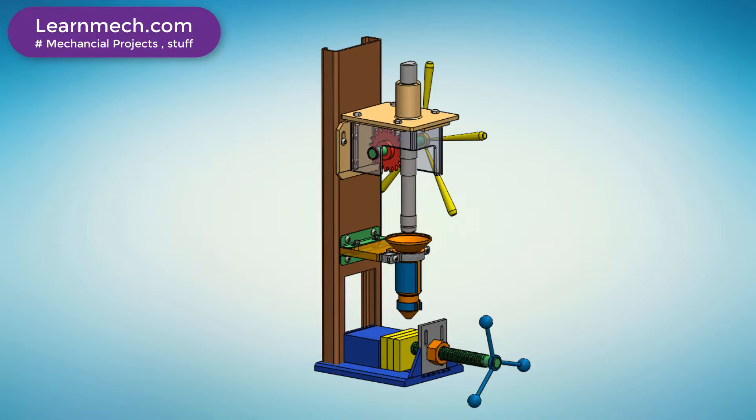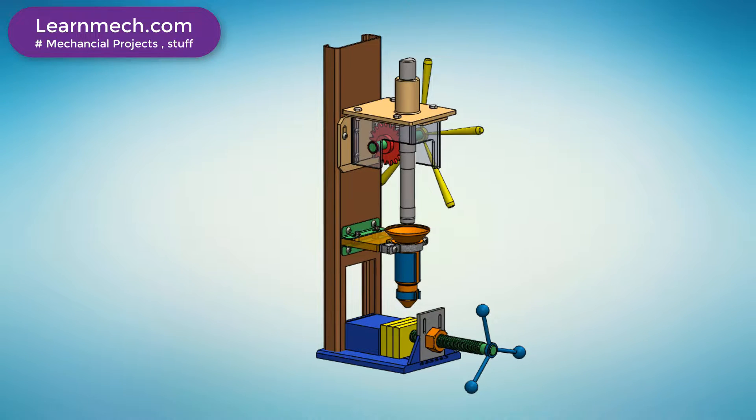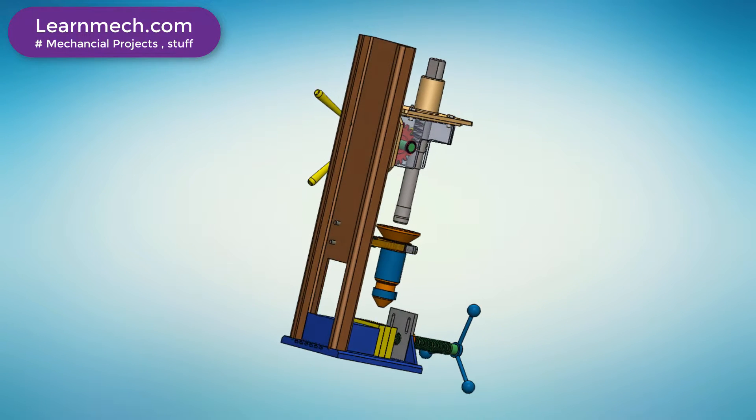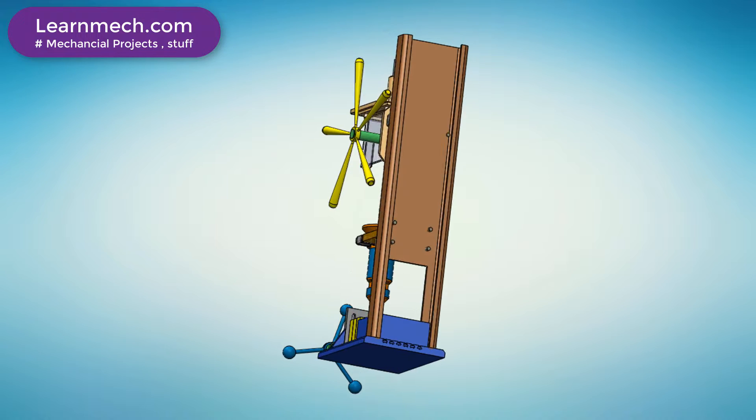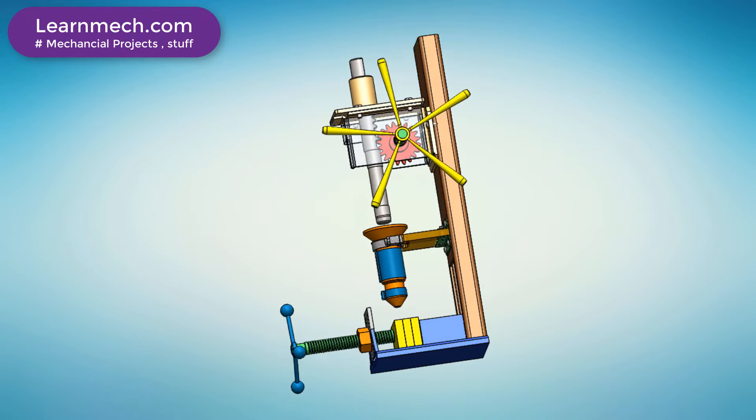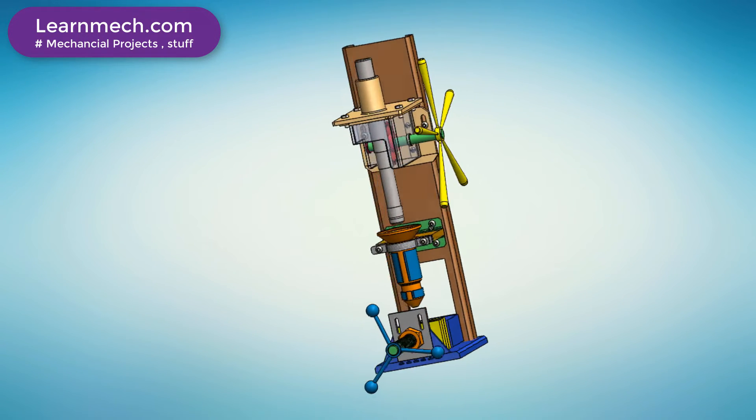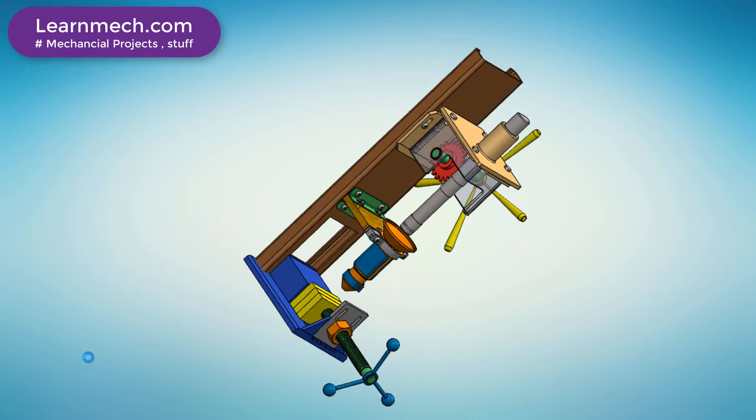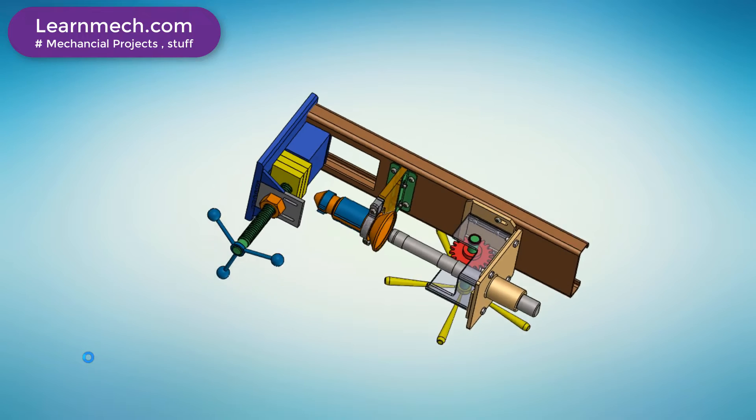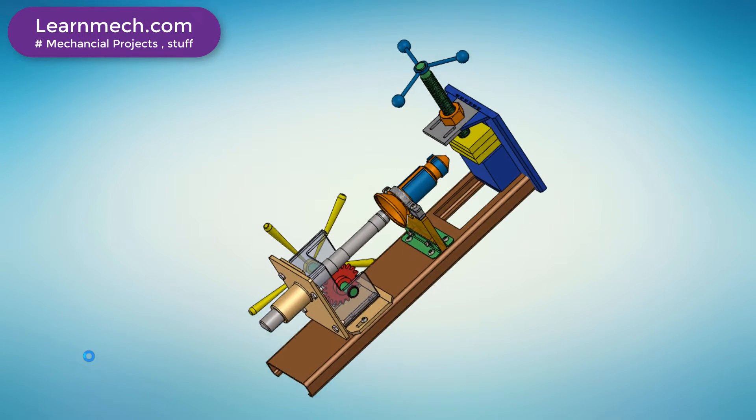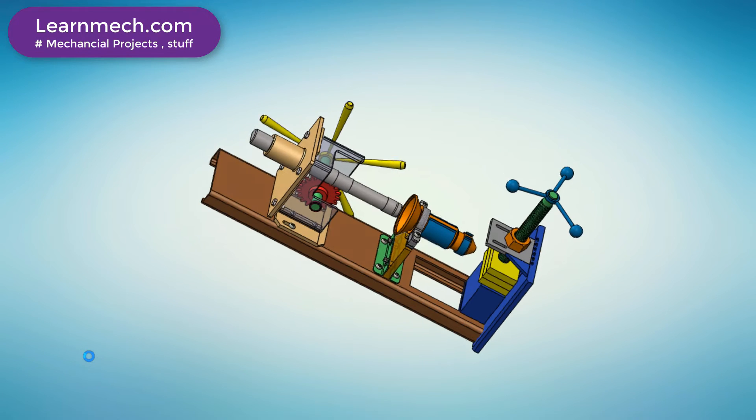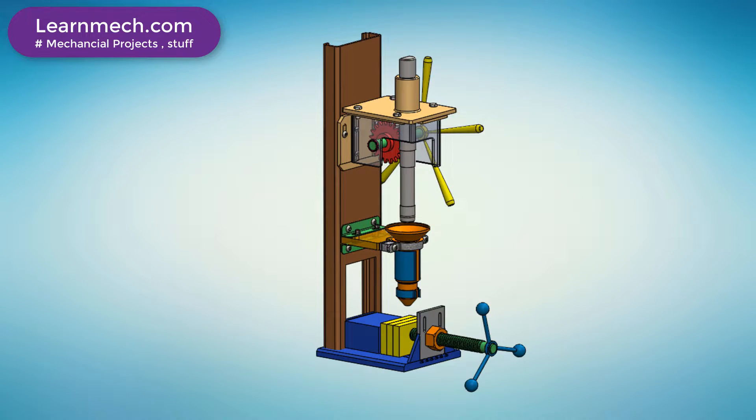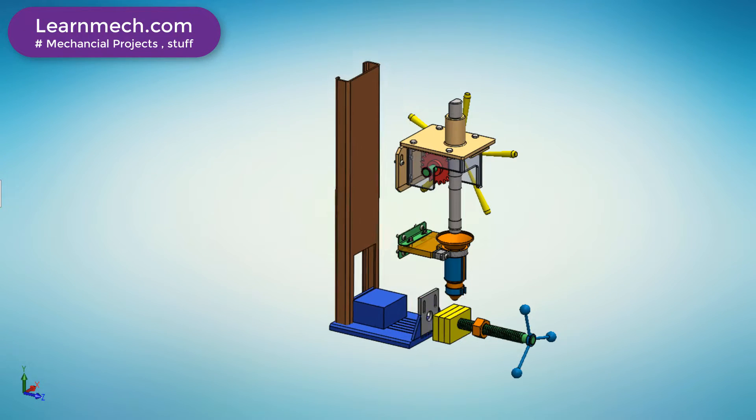In this video we will see a mechanical project titled Design and Fabrication of Hand-Operated Injection Molding Machine. Injection molding is the process of forcing melted plastic into a mold cavity. Once the plastic has cooled, the part can be ejected. The injection molding process is best suited for producing articles made of thermoplastic materials. Let's see the construction of this machine.